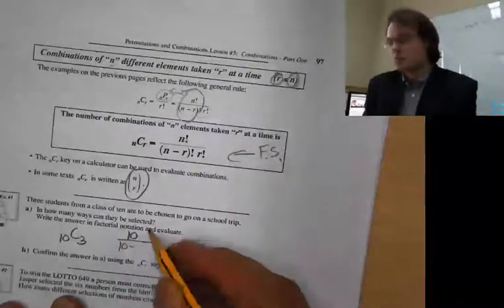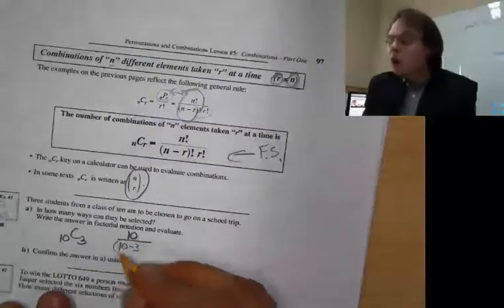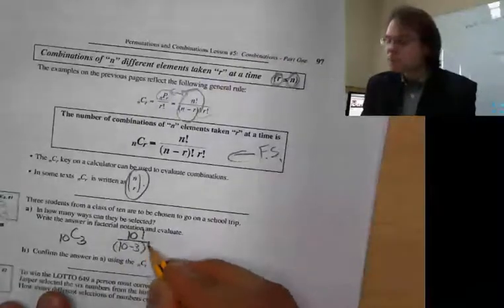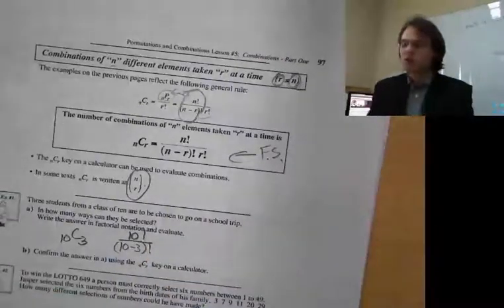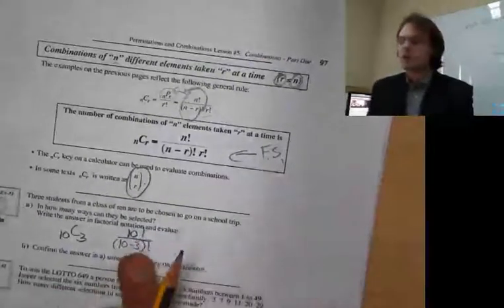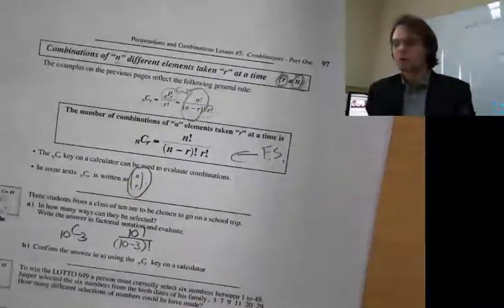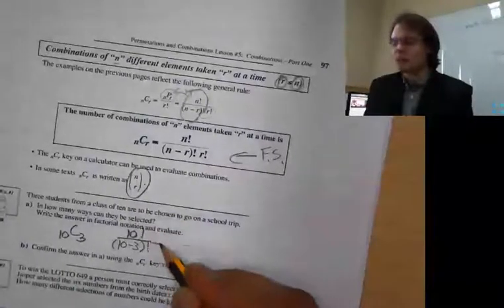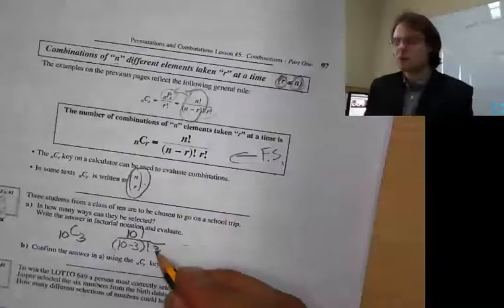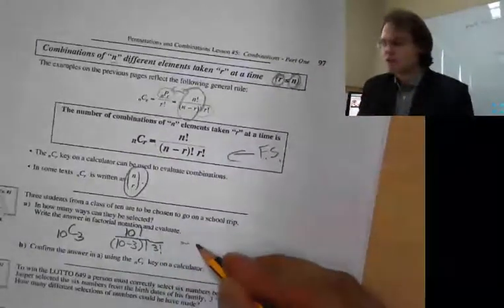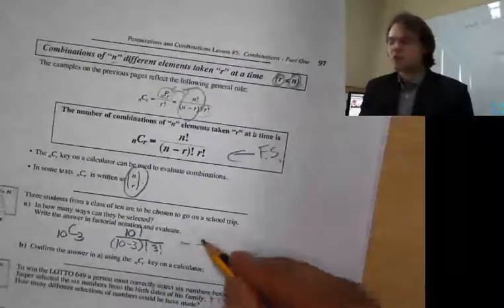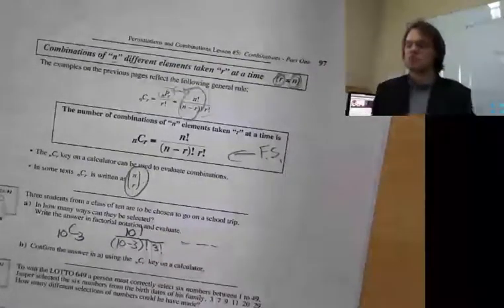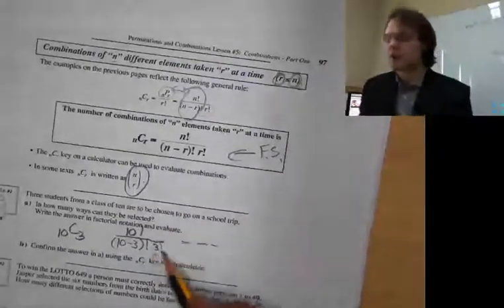We do the permutation formula just like we always did before. But that permutation says the order of which we pick the students matters, so we also have to divide by three factorial — because the order doesn't matter, those three students could be rearranged.